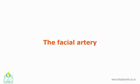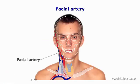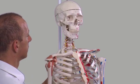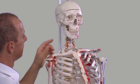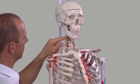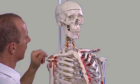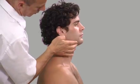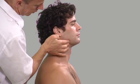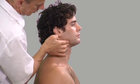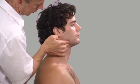The facial artery has an easy-to-palpate pulse. It is best felt as it passes over the ramus of the mandible, approximately midway between the mental tubercle and the angle of the mandible.